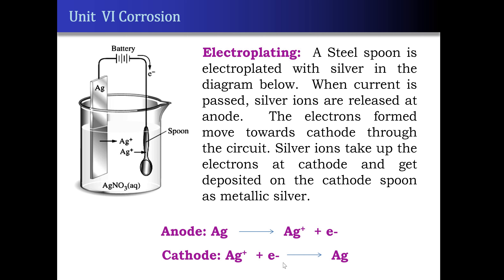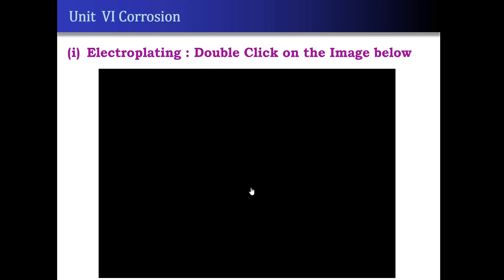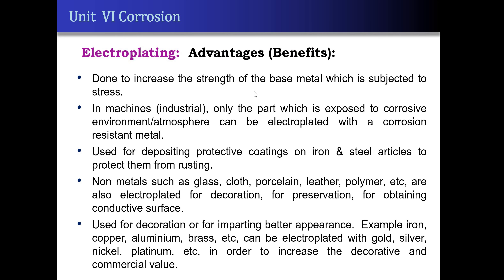These are the reactions taking place at the anode and cathode respectively. Gold deposition on a coin is another example. We can see the advantages of electroplating: if the base metal is subjected to stress, we can increase its strength by electroplating. We can also electroplate machine parts, industrial machine parts, and automobile parts if exposed to a corrosive environment to protect from corrosion. Iron and steel are commonly used metals where iron undergoes rusting, and this rusting can be prevented by electroplating.